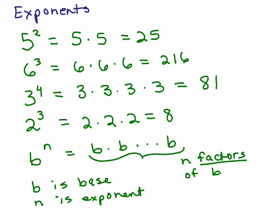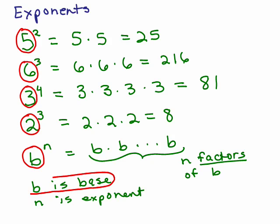So for instance, if I'm going to circle each of the bases up here, 5 is the base, 6 is the base, 3 is the base, 2 is the base. So the base is b.